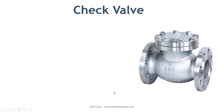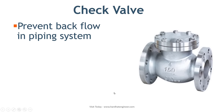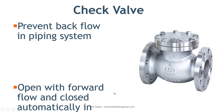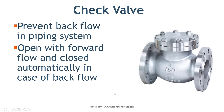The check valve prevents backflow in the piping system. The pressure of the fluid passing through a pipeline opens the valve, while any reversal of the flow will close the valve.